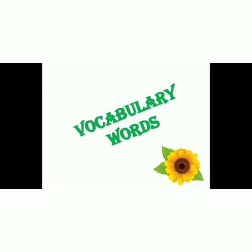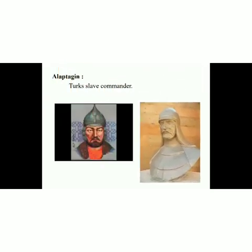In the upcoming lecture, we will be discussing the Ghaznavid dynasty in detail. So we have to learn these new words and their meanings. The first one is Alptegin. Alptegin was a Turkic slave commander. Slave means ghulam and commander is the head of an army. So Alptegin was a Turkic slave commander. I hope the meaning is clear.